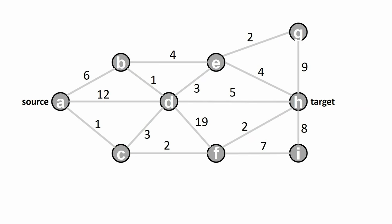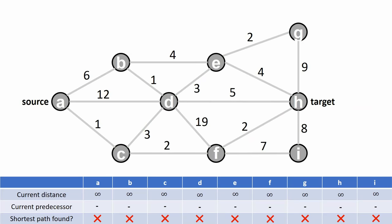Before we start, we need to check that all edge weights are greater or equal to zero. Throughout the algorithm, we keep track of the so far shortest distance to each vertex and the current predecessor of each vertex on the current shortest path in the table below.